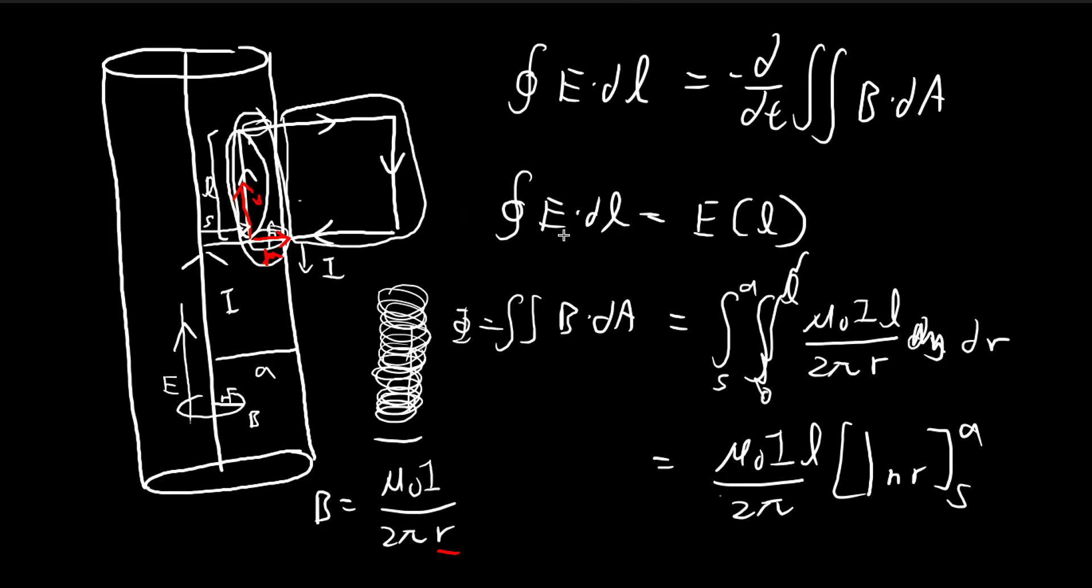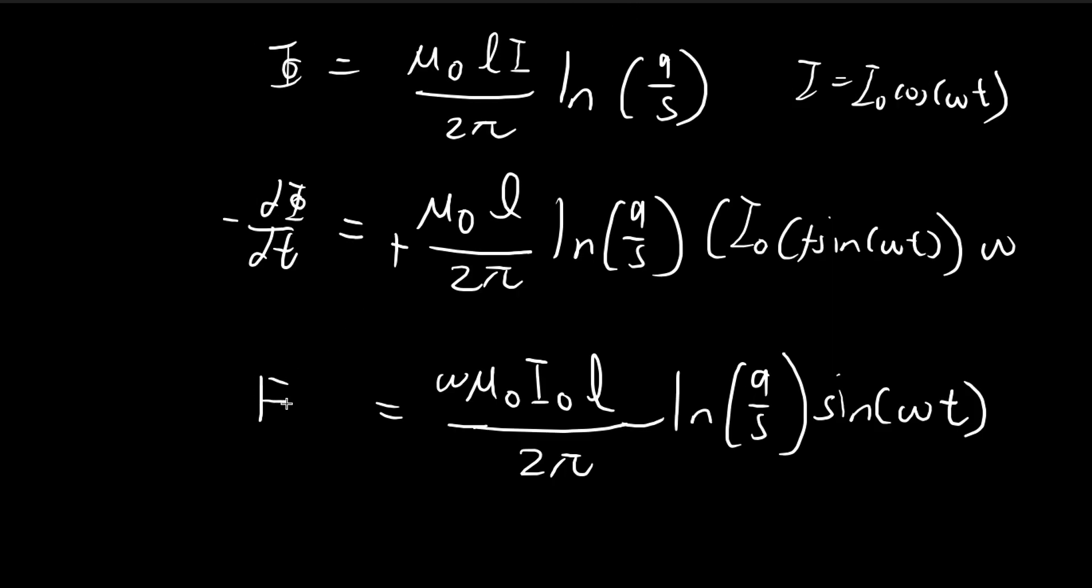And going back to Faraday's law, this is equal to the line integral. So as you see, the Ls, they cancel out. So which is, as I've said before, you don't need to worry about the value of L. So it cancels out. So in the end, you get this answer.